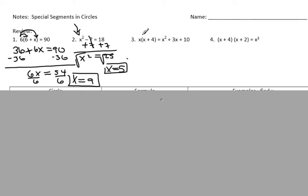The next one uses distributive property and multiplying two variables. When you multiply two variables together, x times x, it's not 2x, which is a common mistake. x times x is one number times itself, which means that number squared. So x times x is x squared. x times 4 is a positive 4x. That equals x squared plus 3x plus 10.